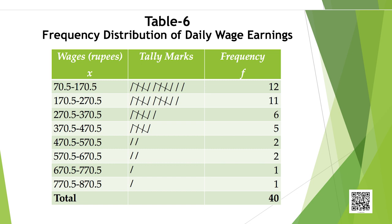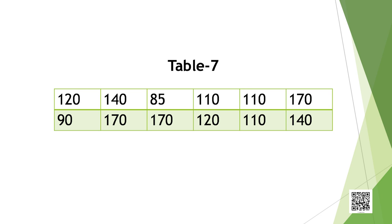Once the data have been grouped into class intervals, we obtain the frequency distribution. The frequency distribution gives the number of observations, i.e., frequencies, in different classes but not their actual values. All values in any class are assumed to be equal to the middle value of the class interval. This leads to the error of grouping. For example, look at Table 6 once again. In this table, there are 12 values in the class 70.5 to 170.5, and we assume them all to be equal to the middle value, which is (70.5 + 170.5) / 2 = 120.5, of the class interval.